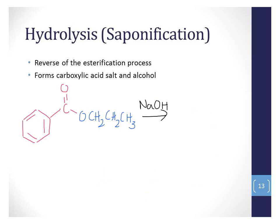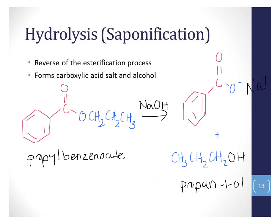Hydrolysis is the opposite of the esterification process — instead of making an ester, we're breaking it apart. It's called saponification because it's used in soap making. If we add a base to propylbenzoate, we break apart the ester into the salt of the carboxylic acid and the alcohol. In this case, we'll get the salt of benzoic acid, and we'll also get our alcohol, propan-1-ol.